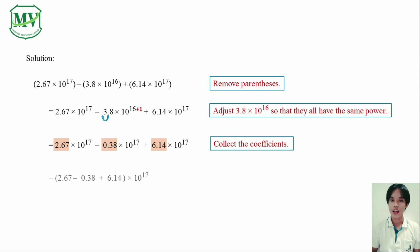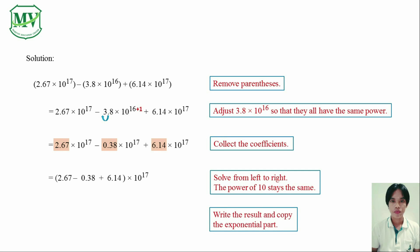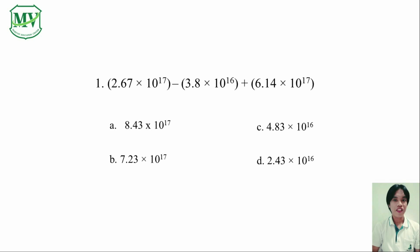Next, we calculate. Perform the operations from left to right. The exponential part remains the same. Our final answer is 8.43 x 10 raised to the power of 17. And the letter of the correct answer is A.